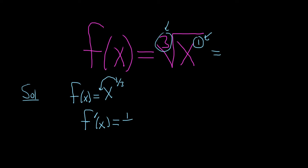So 1 over 3, then you have your x. And then you subtract 1 from the exponent, right? There's a 1 third here.